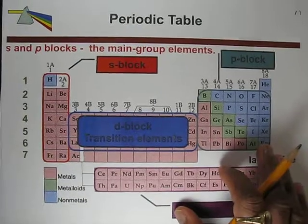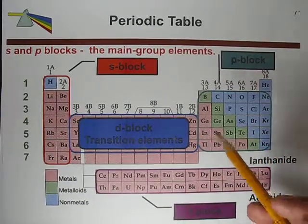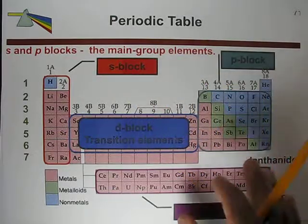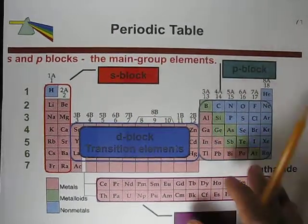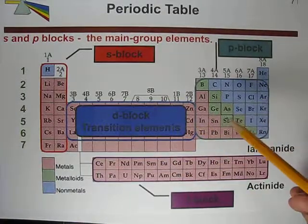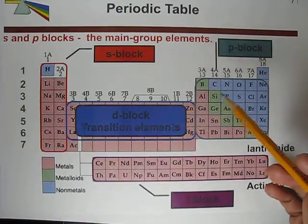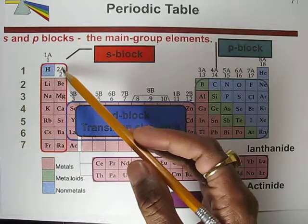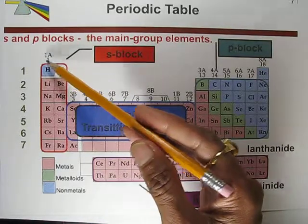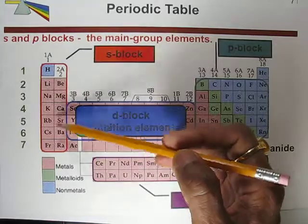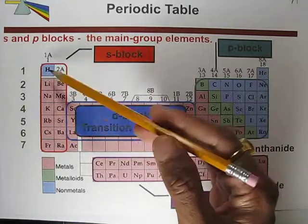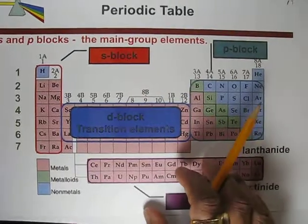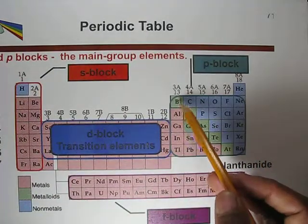In this video we will talk about the periodic table and electronic configuration. The whole periodic table has been divided into four main blocks based on electronic configuration. Block one and block two, called alkali metals and alkaline earth metals — all these elements from top to bottom are called s-block elements.